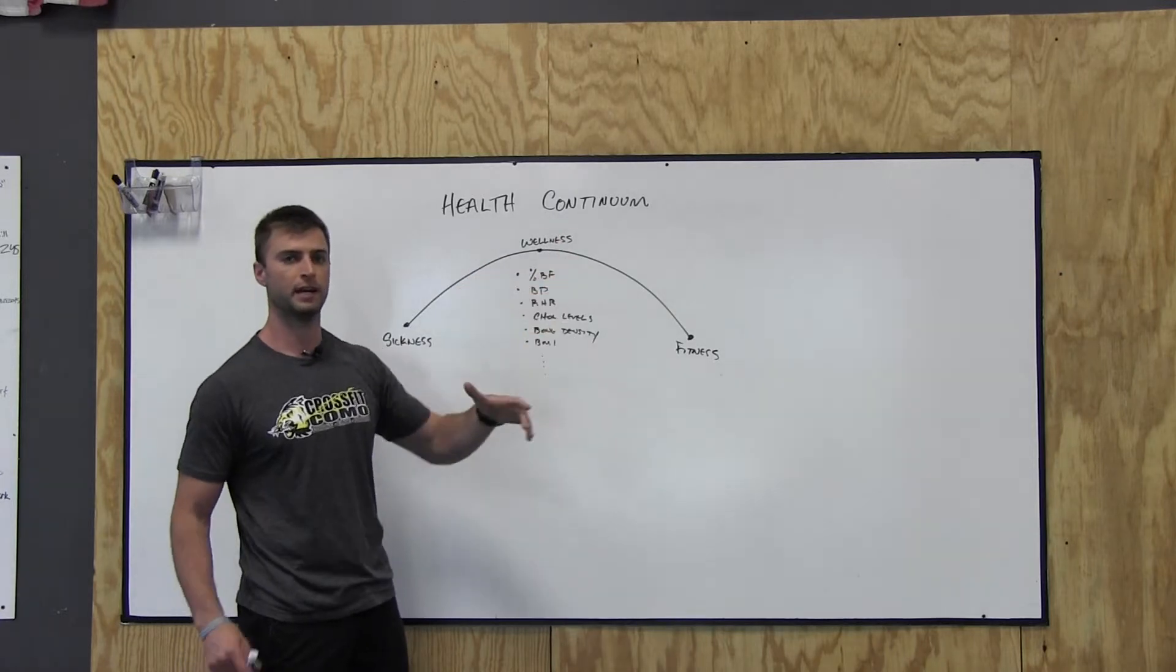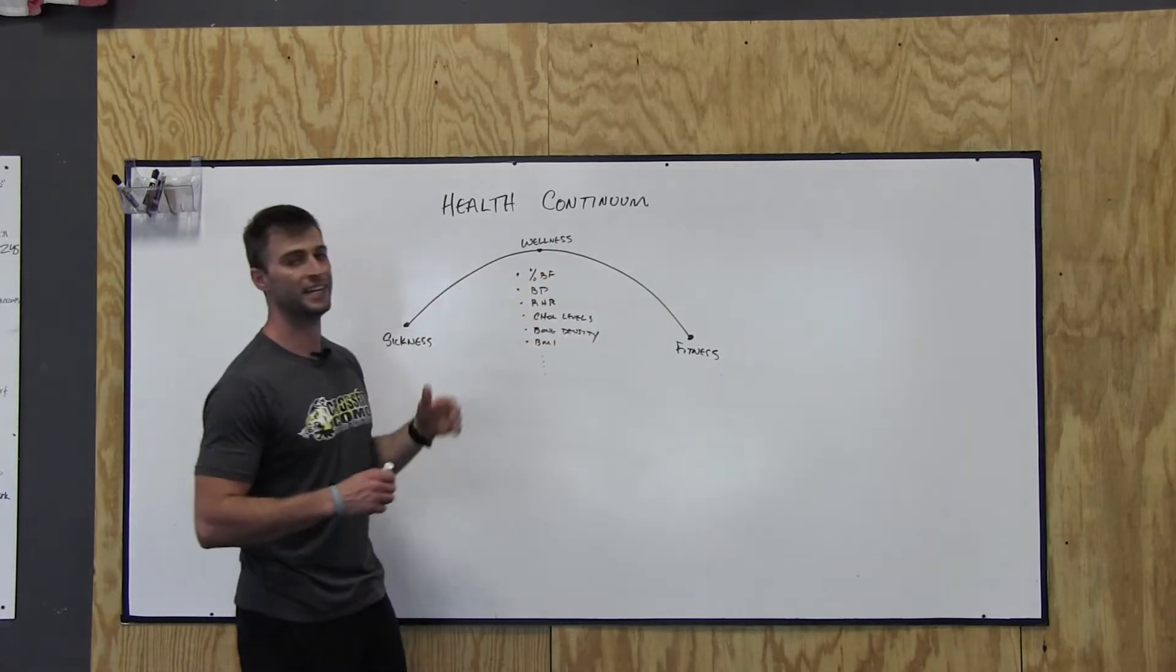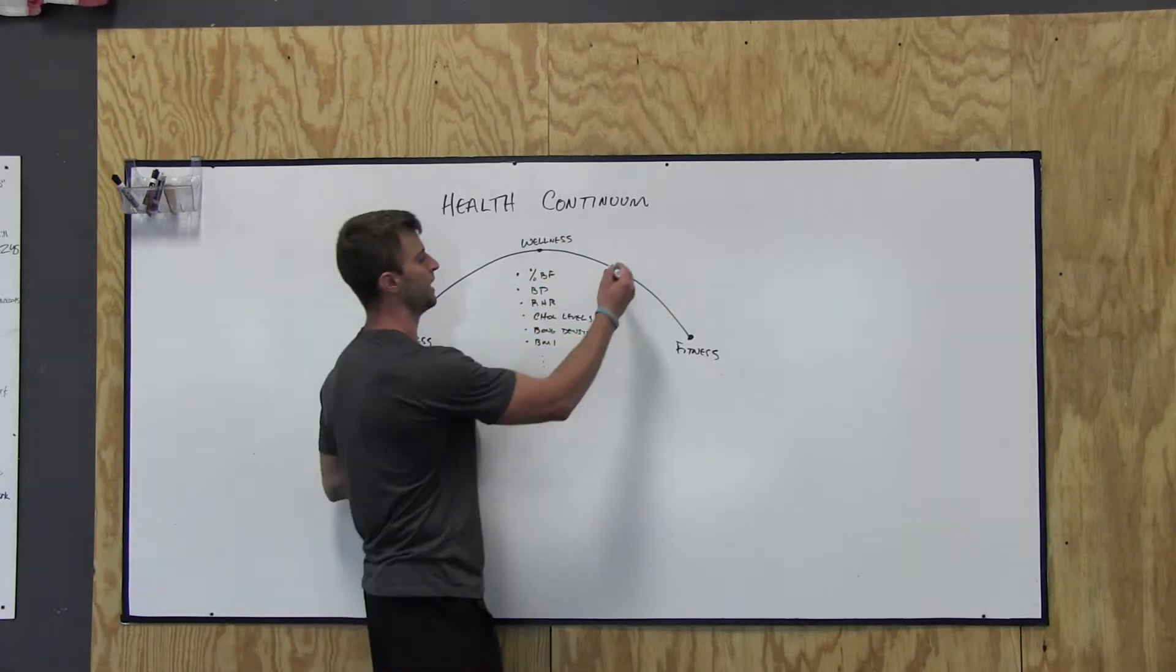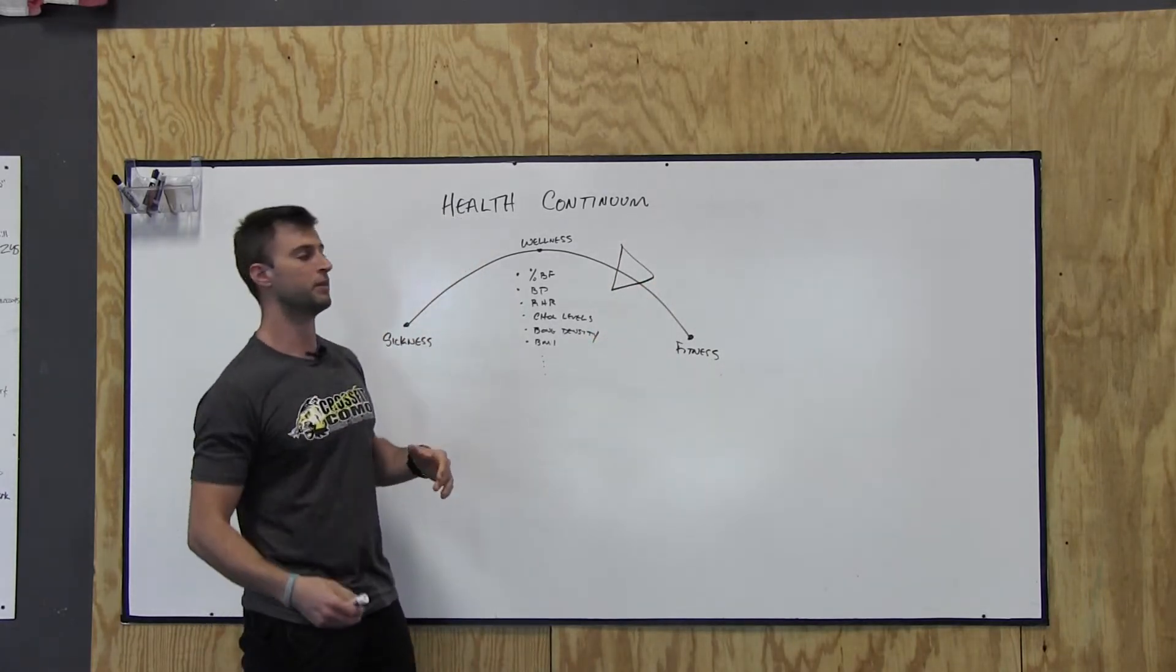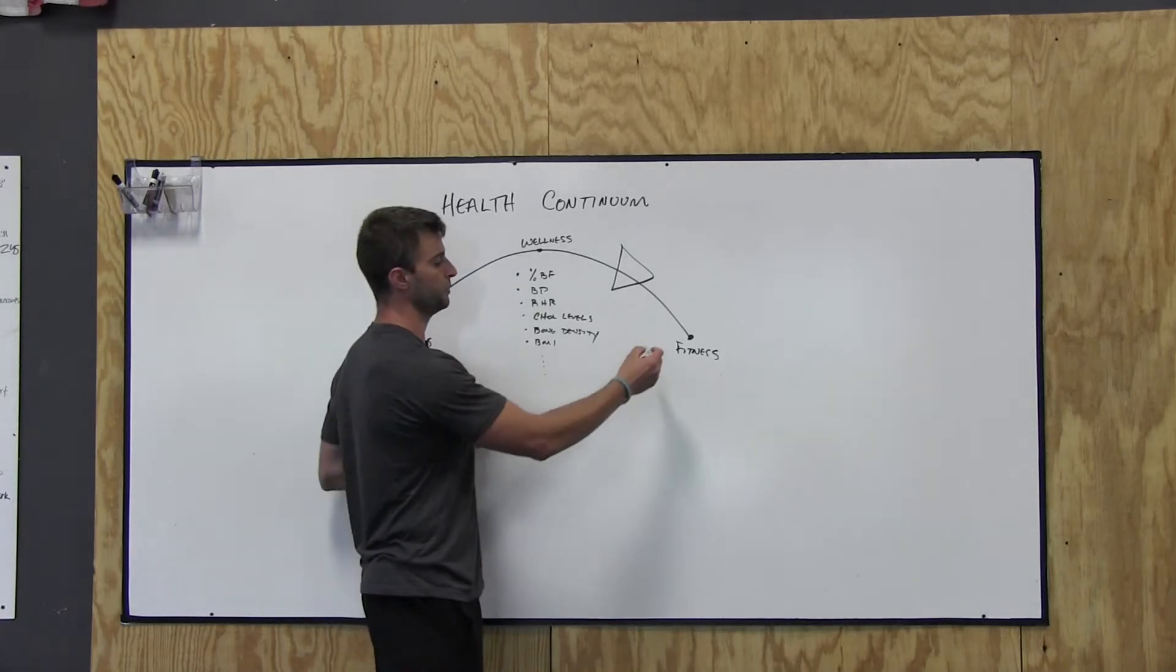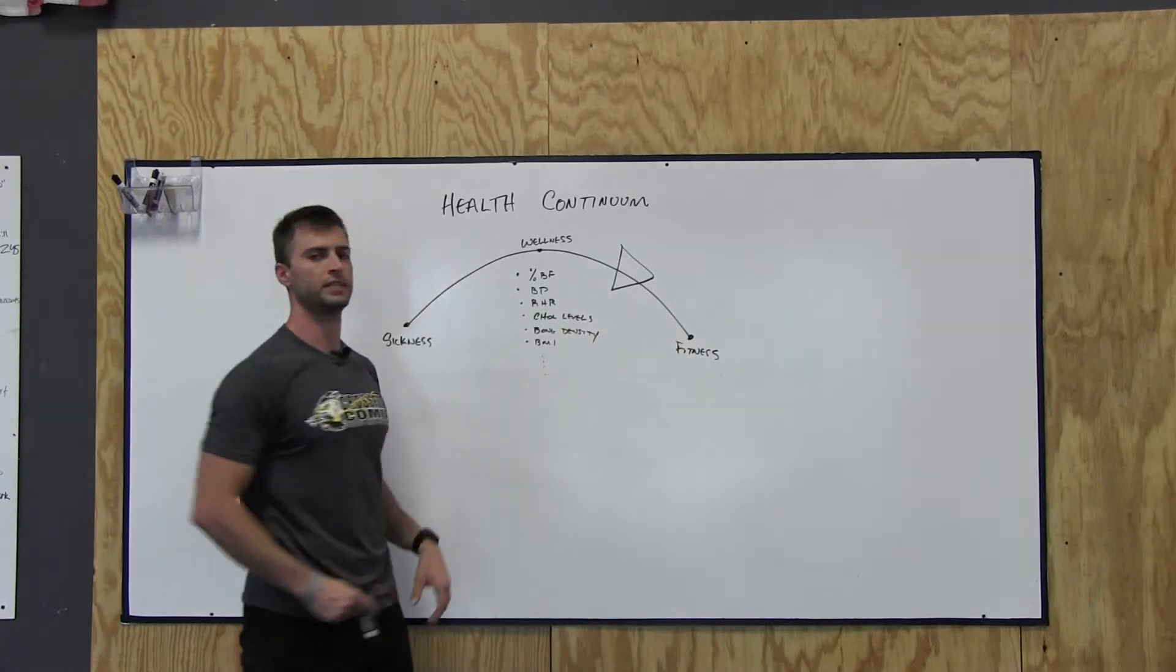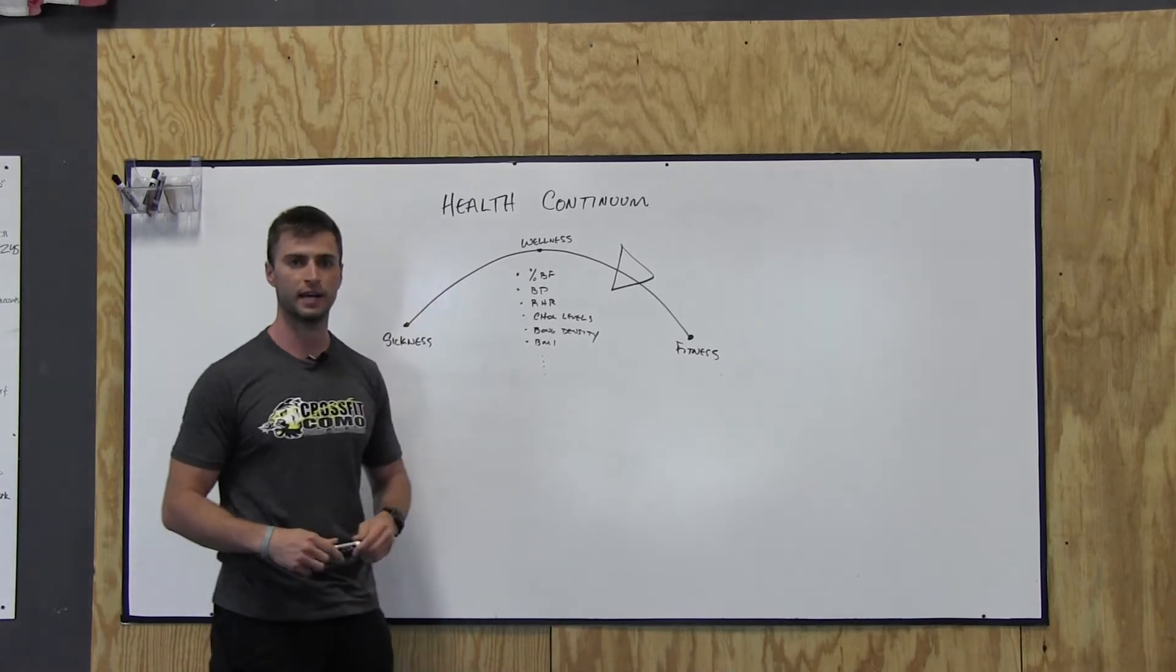So throughout your lifetime, can you get over to this side? And once you're over to this side, can you drive a huge wedge into this continuum? That would make it even longer for you to eventually fall over into the sickness side of things. This is your health savings account.